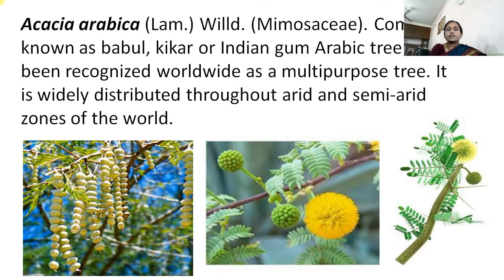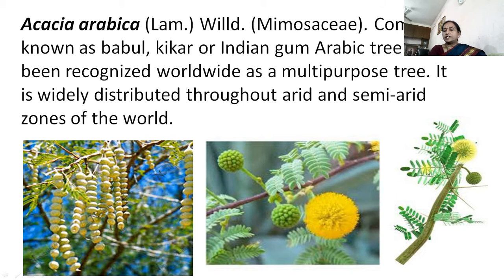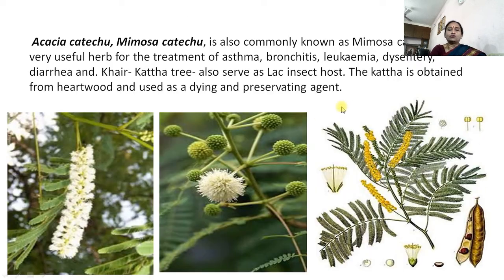Acacia arabica, commonly called babul or Indian gum Arabic tree: this is the lomentum and this is the flower, the globose head inflorescence, and a twig of this plant. It is distributed throughout arid and semi-arid zones of the world.